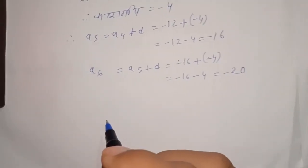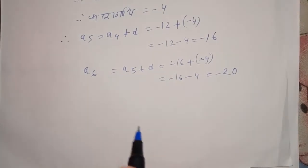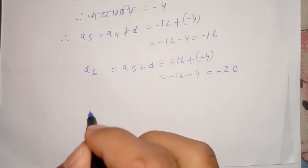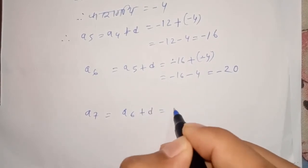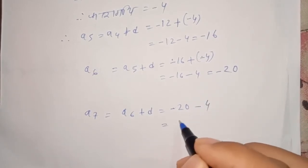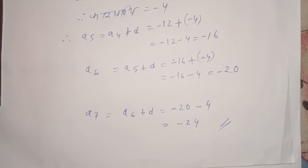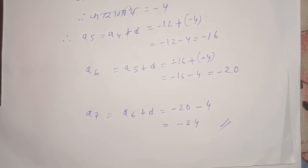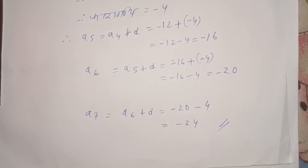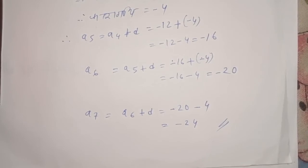A6 equal to A5 plus D, minus 16 plus minus 4 equal to minus 20. A7 equal to A6 plus D, A6 is minus 20 plus minus 4 equal to minus 24.